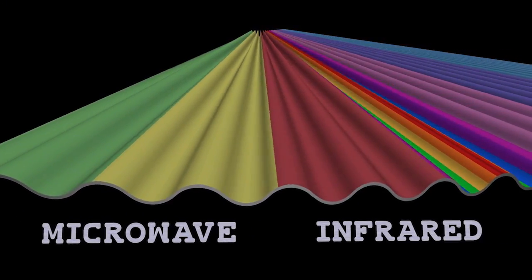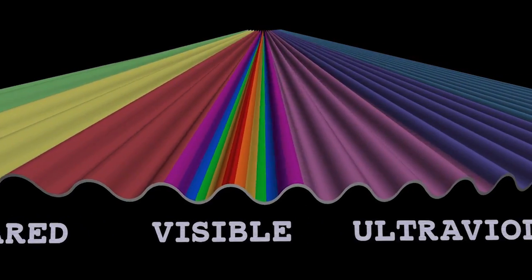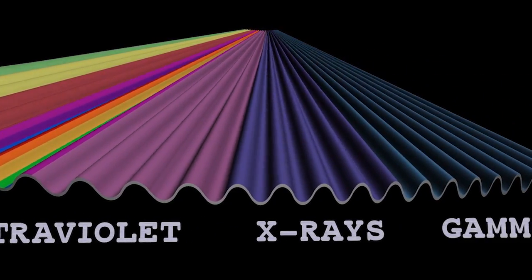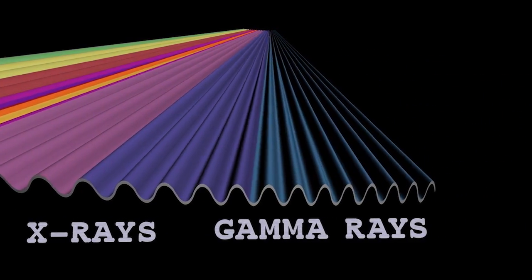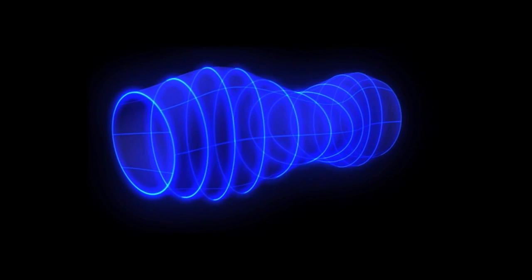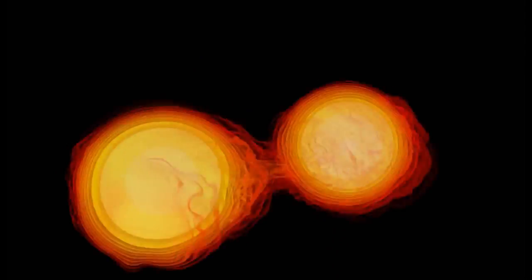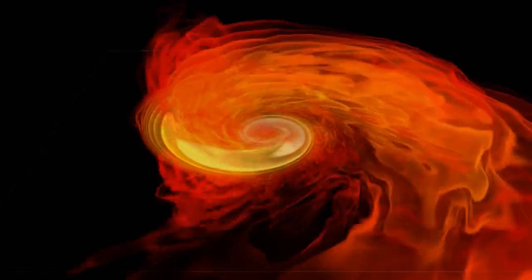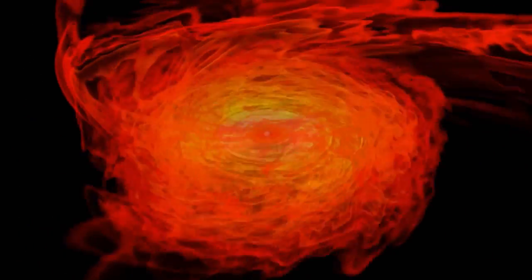Until now, scientists have learned about the universe mainly by studying light and other electromagnetic waves from space. But gravitational waves are ripples in space itself. They are set off by stellar cataclysms, such as massive neutron stars or black holes whirling together.